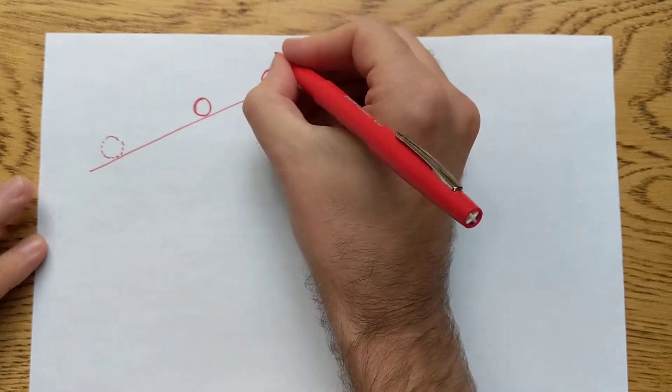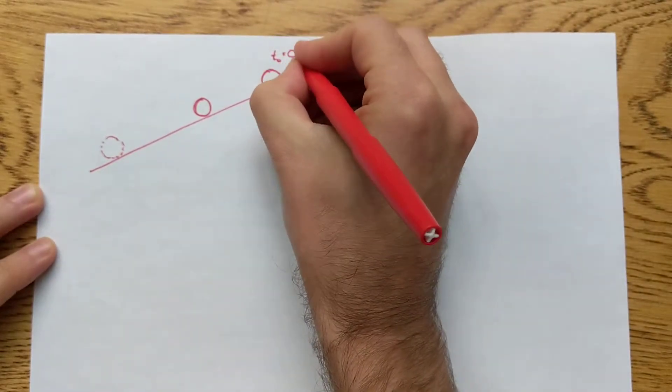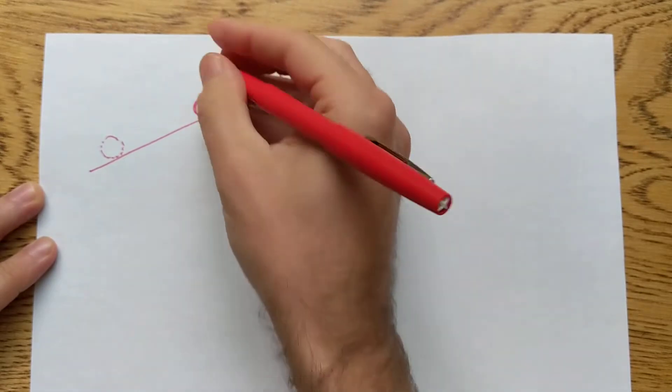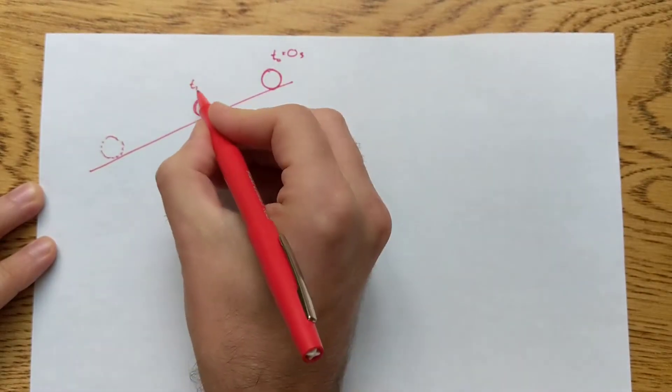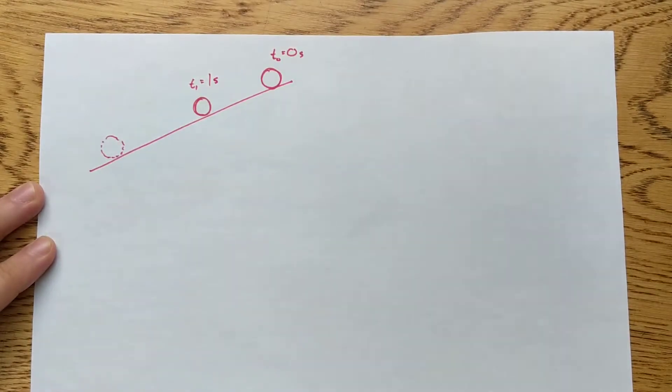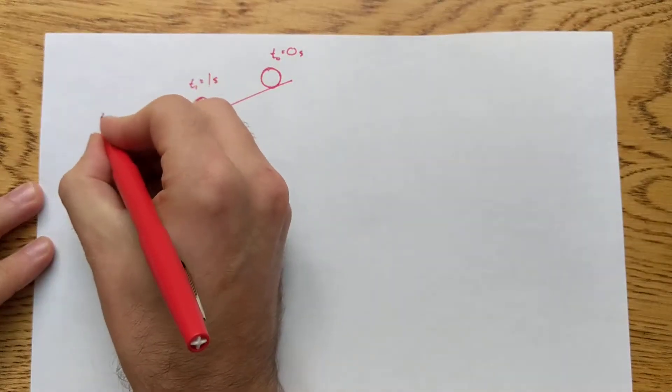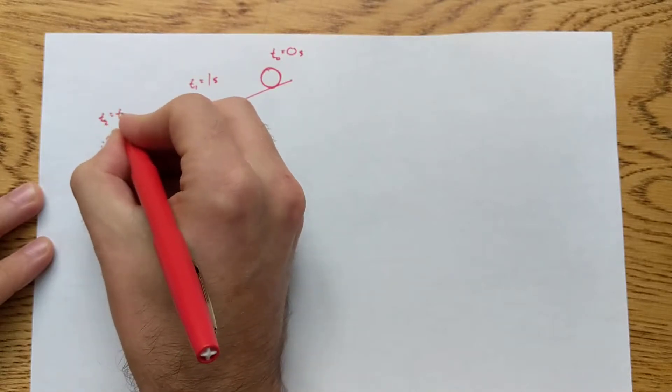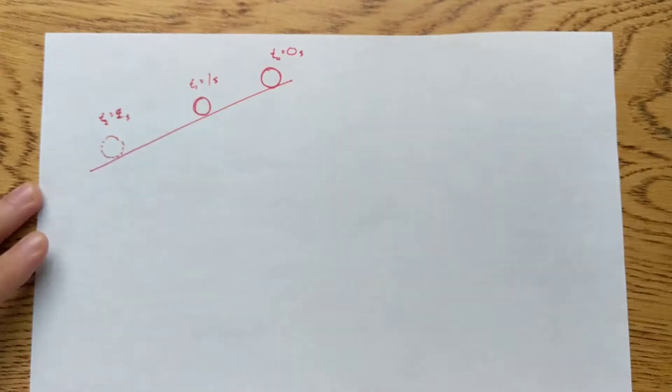I'm also going to start labeling these things. So at T0, I'm going to say that that's zero seconds. And at T1, I'm going to use the subscript to denote how many seconds it is. So just to explicitly write it out, that's one second. And then T2, of course, means two seconds.